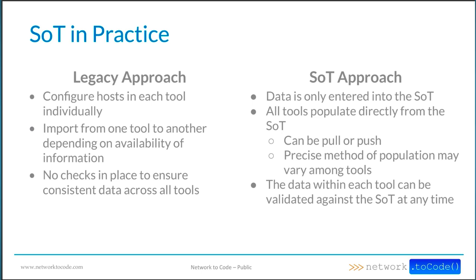The precise method of population is obviously going to vary depending on what APIs and mechanisms are supported by the source of truth you're using, as well as the tools consuming data from it. It's also important to note that new data originated from the source of truth will overwrite any old data where discrepancies exist. The source of truth is the authority for data — it means surrendering that authority, saying whatever is defined in the source of truth, even if it doesn't match what's in my NMS, that has to be correct.